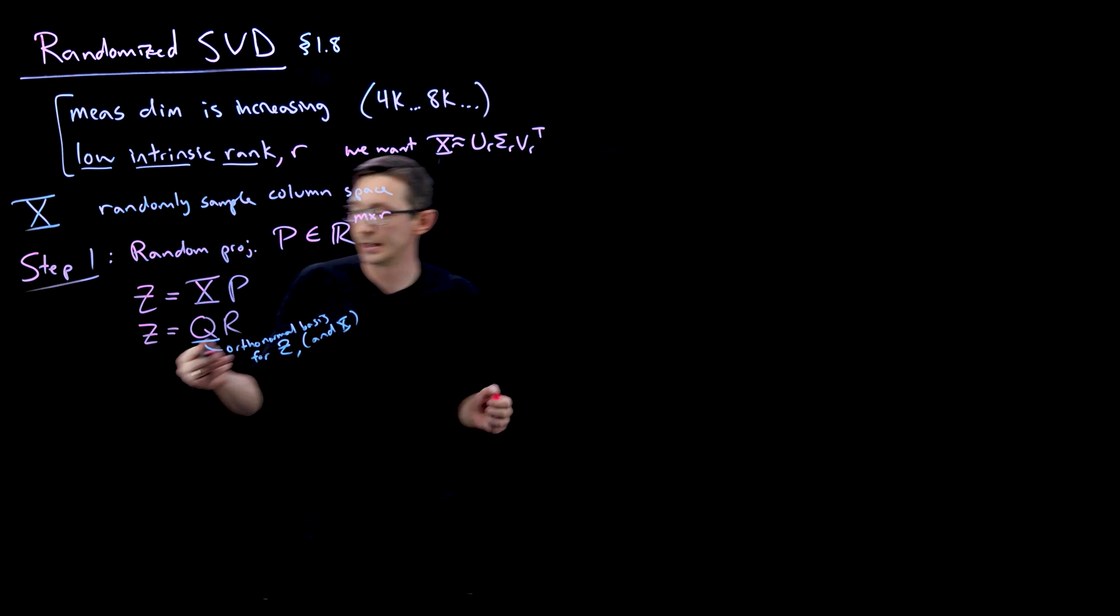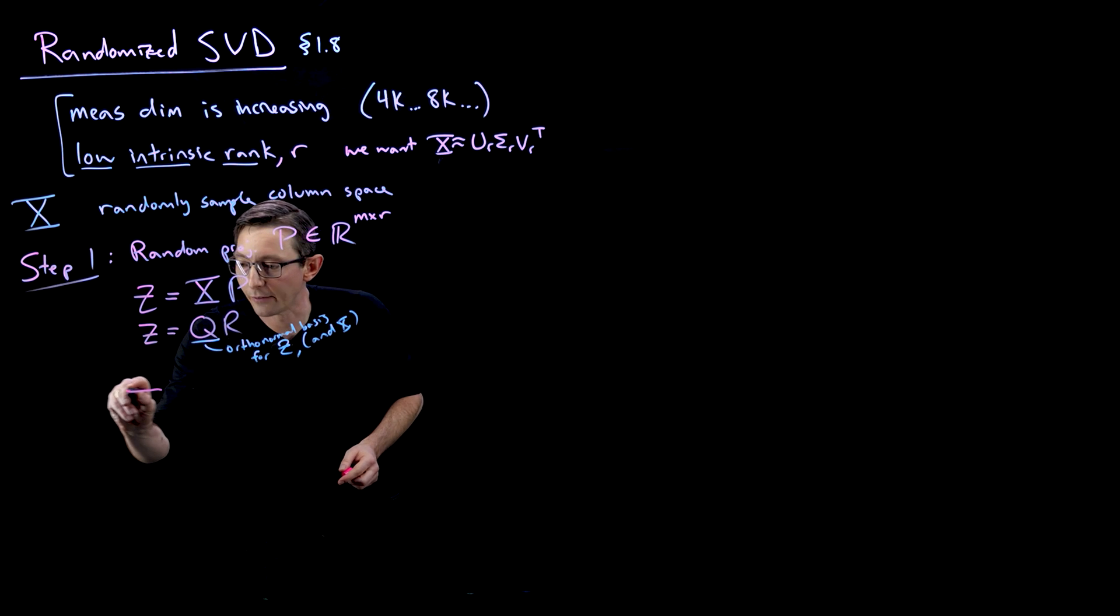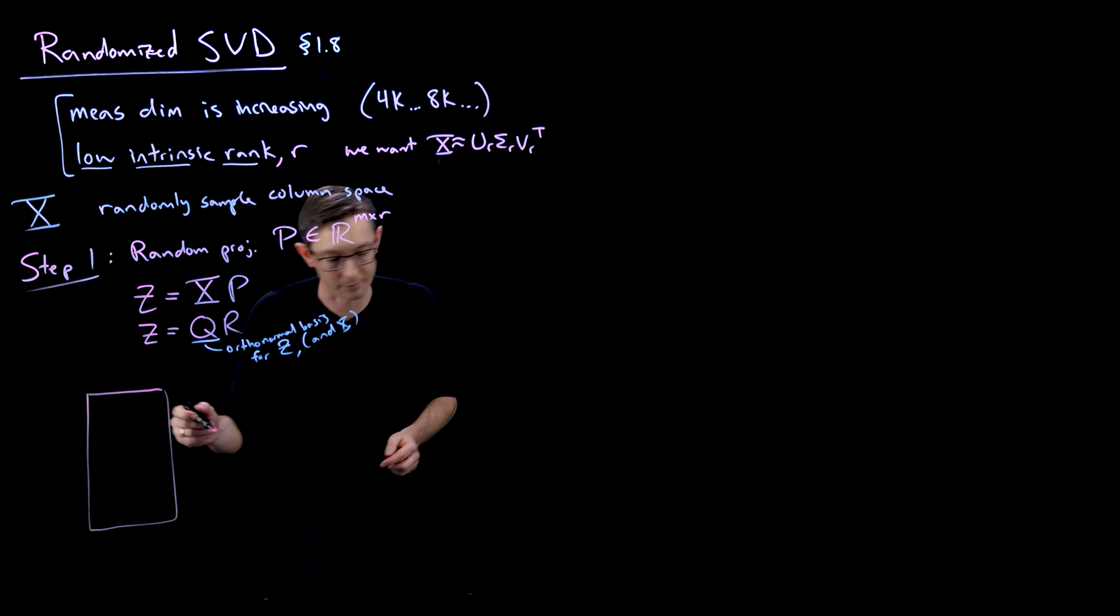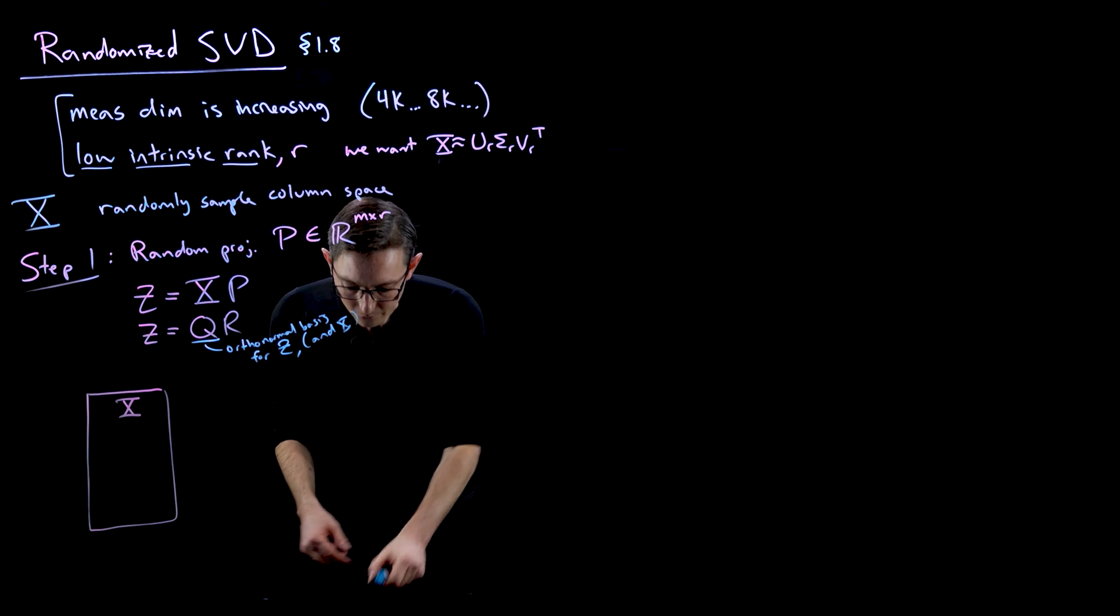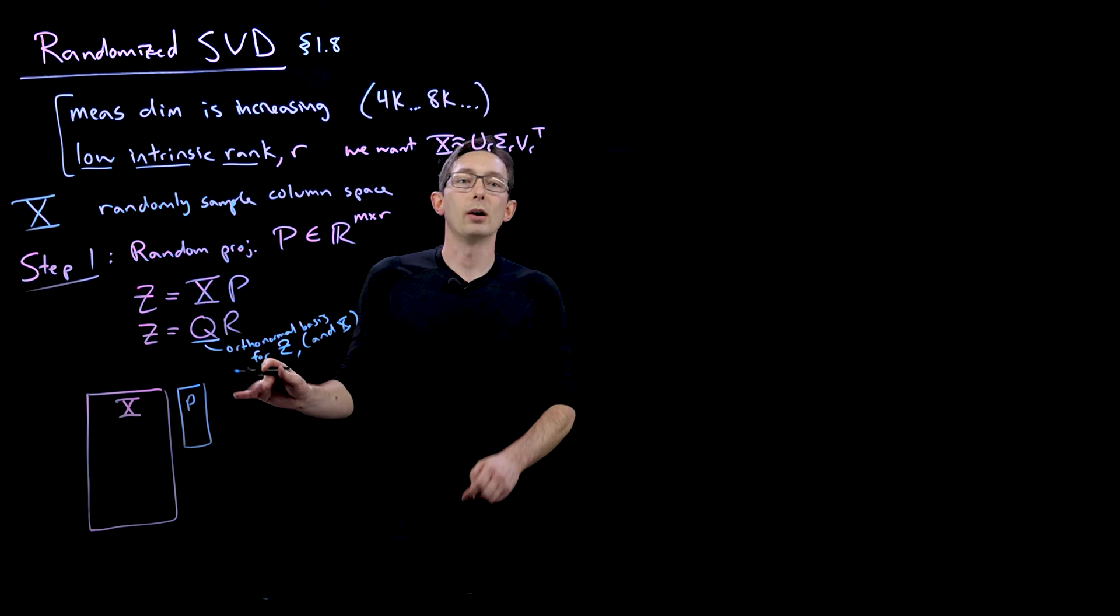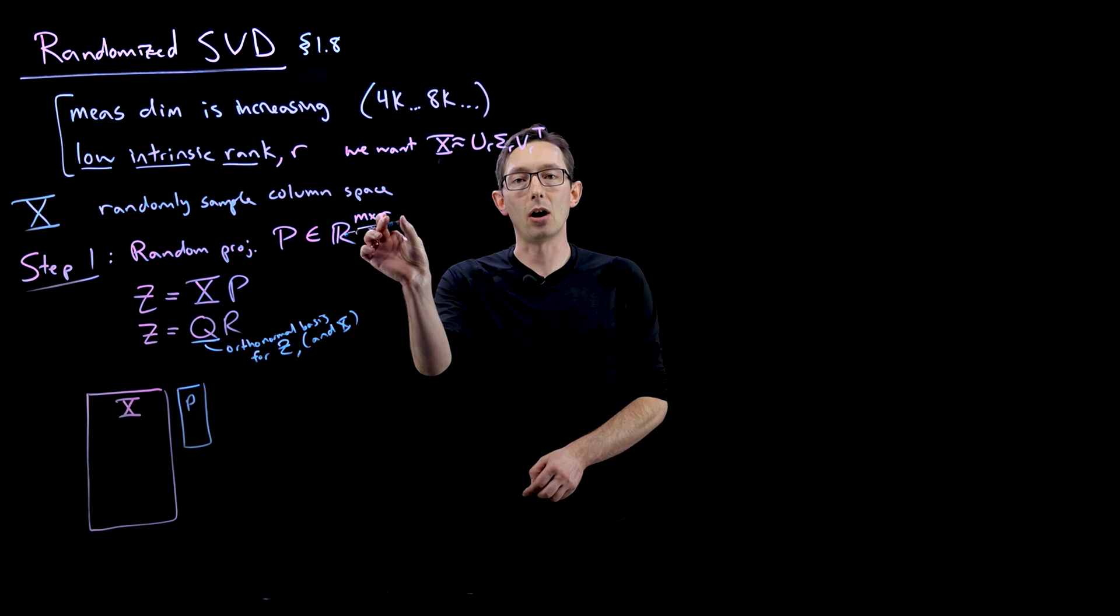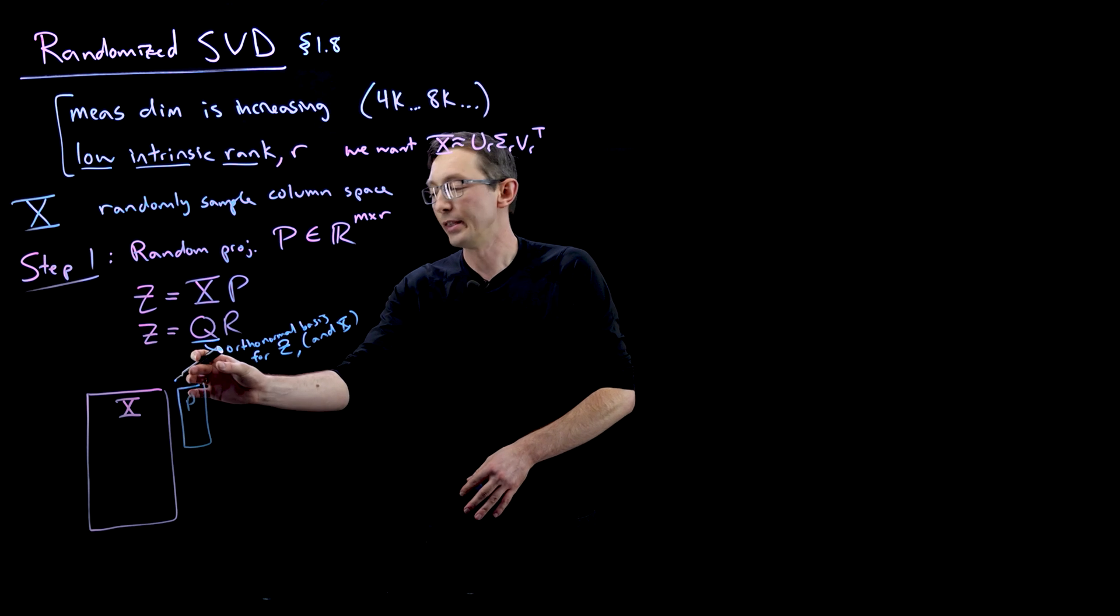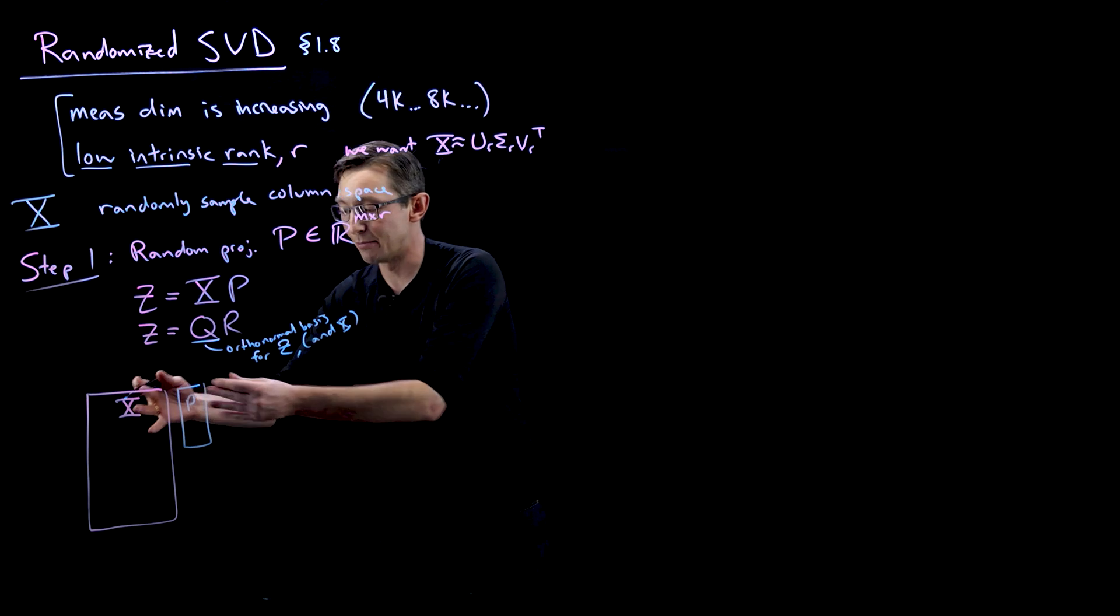And so in pictures, this is pretty easy to picture. We have our big X matrix. This is our input. This is our big X matrix. What we're going to do is we're going to multiply it by a really, really skinny P matrix where P only has as many columns as the rank that I want to capture. This is rank R. Then this is going to have R columns, and it's going to be much, much smaller.